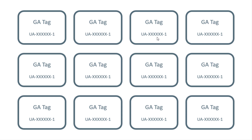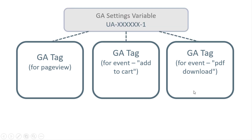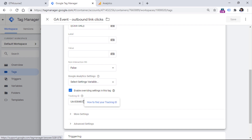What you could do instead is use a variable that contains the most common settings, so all tags use the same variable. Instead of having settings individual to each tag, you could have one variable containing the most common settings — for example, tracking ID, cookie settings, custom dimensions, anonymized IP, or other additional configuration. All tags would inherit those particular settings, and the type of that variable is the GA settings variable.